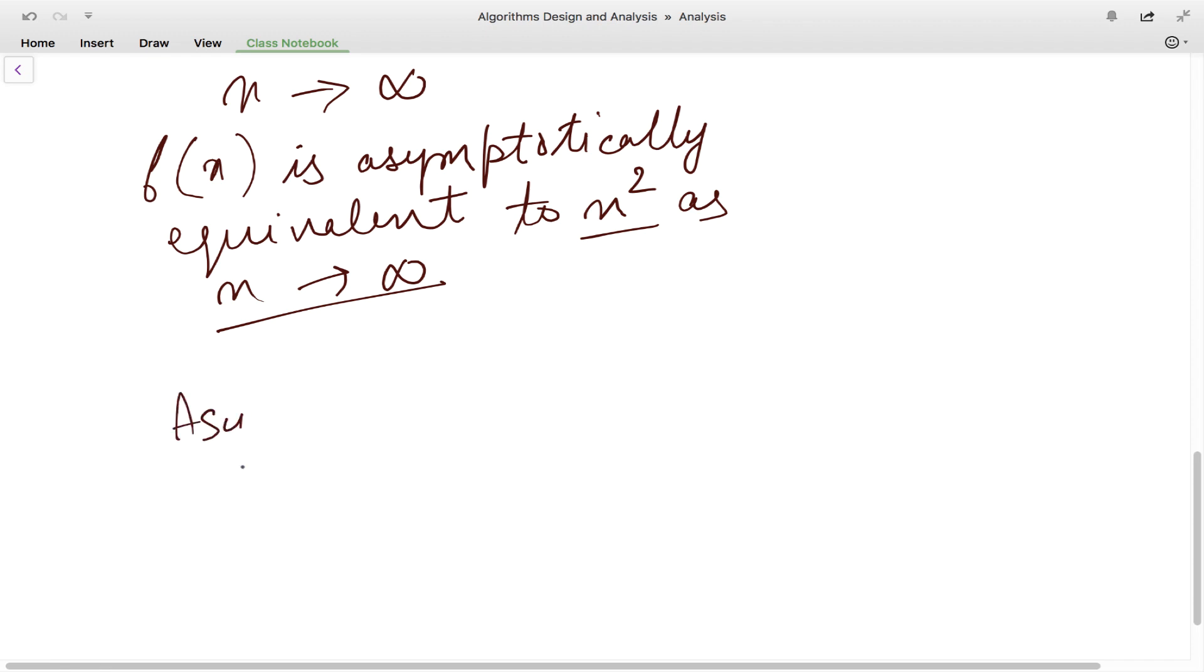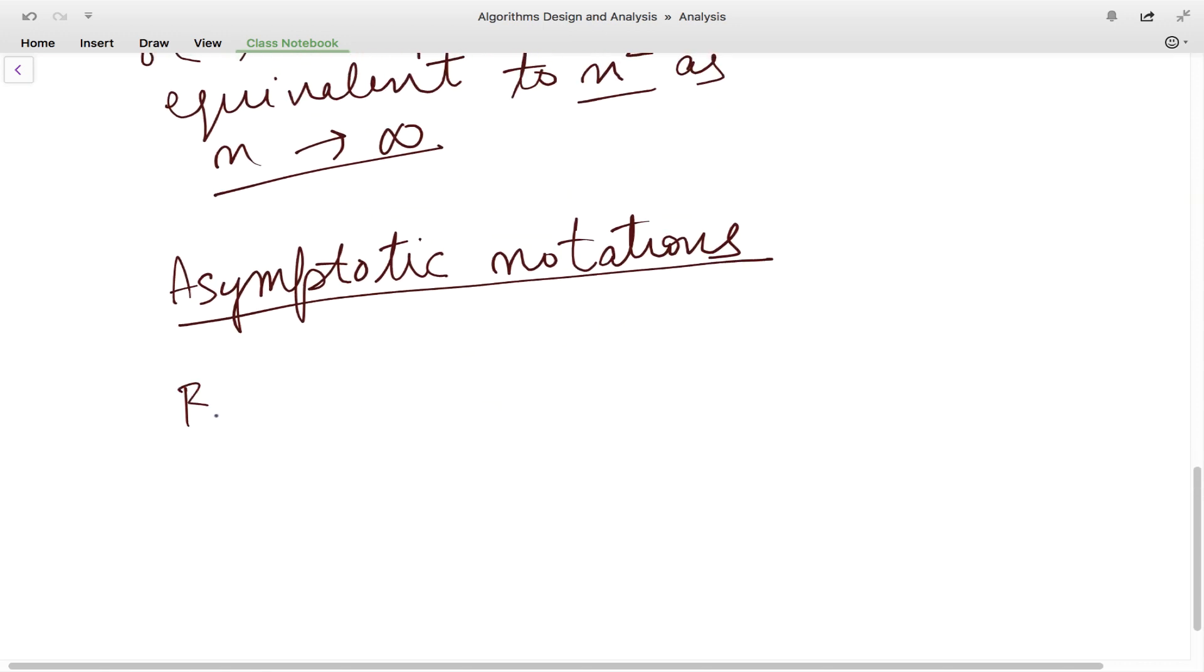Let us go through asymptotic notations. One of the most popular notation is Big O, and this notation is used for the worst case scenario.